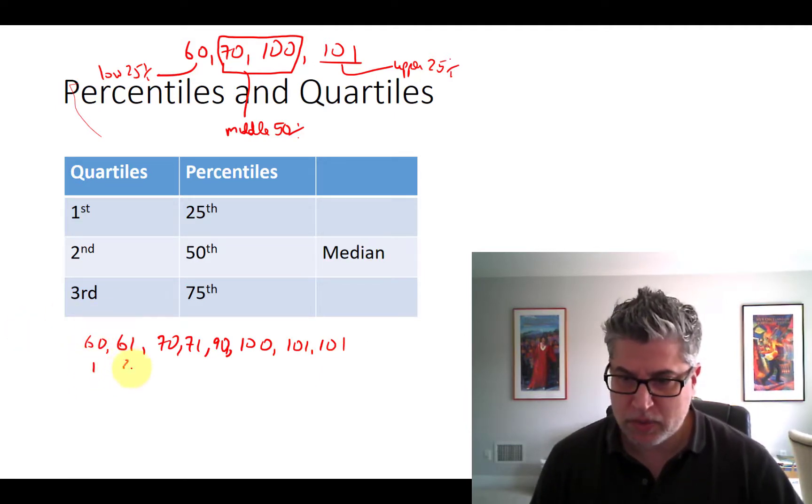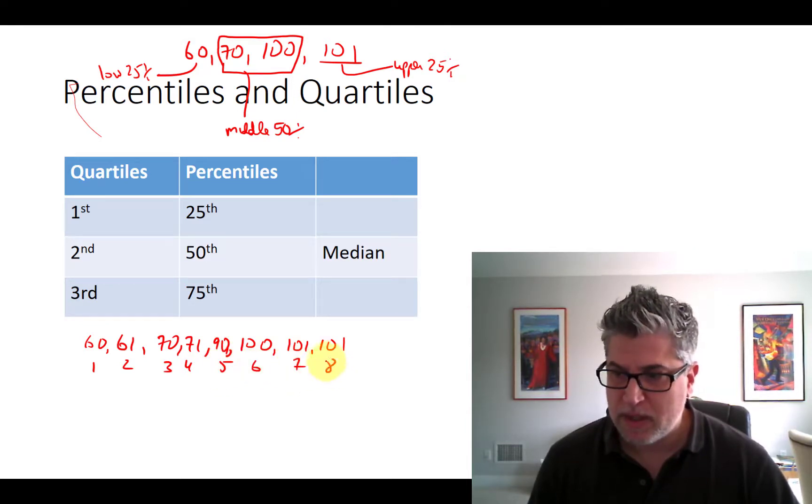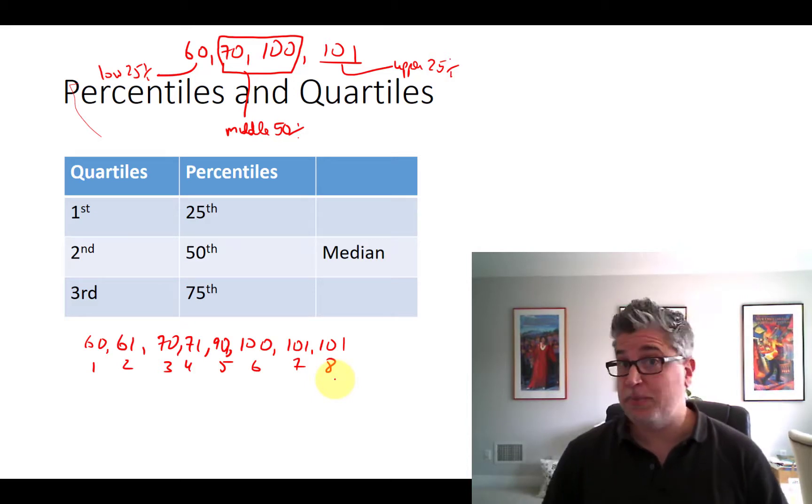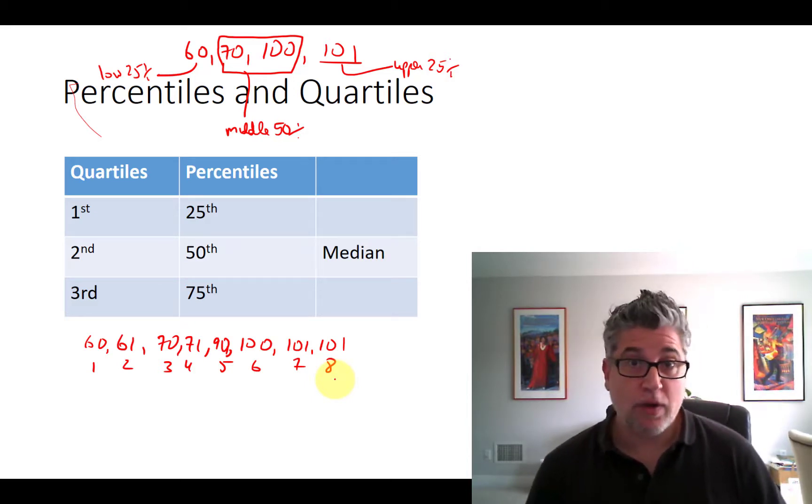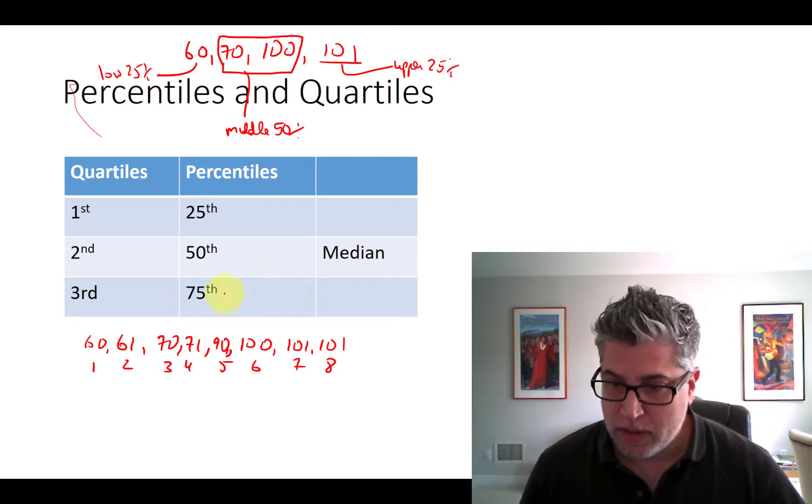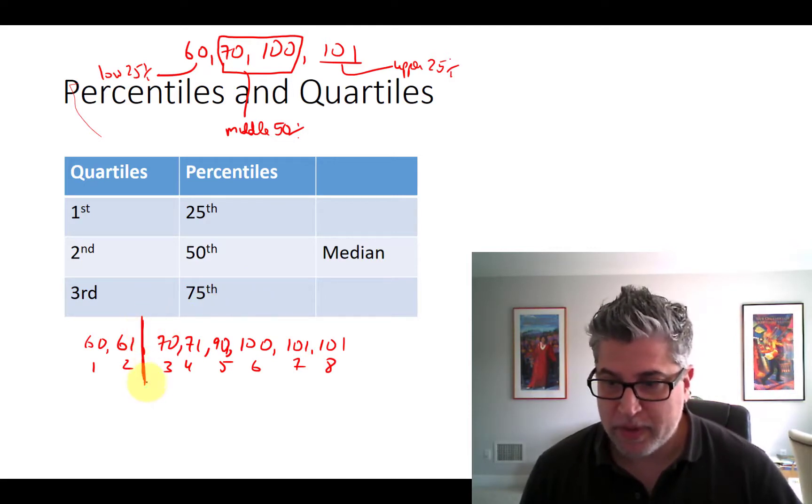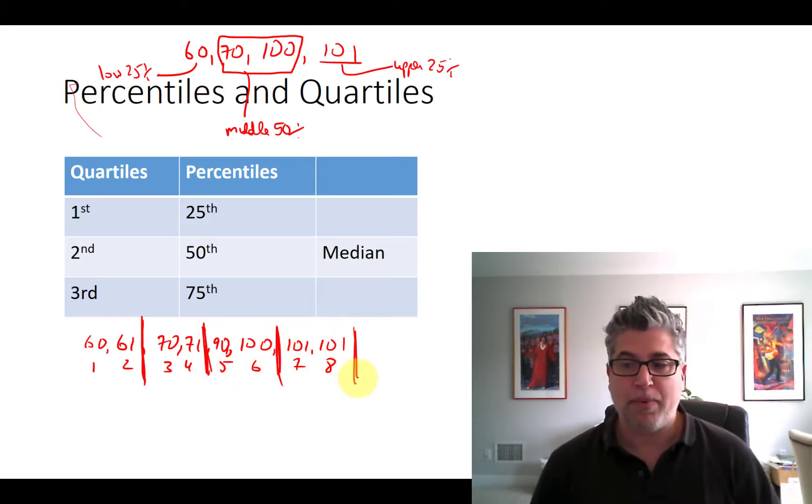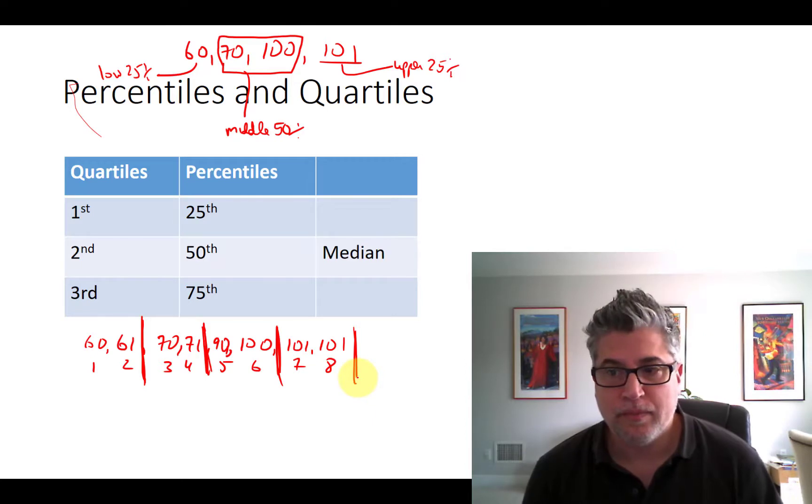Do I have eight numbers here? I've got one, two, three, four, five, six. I have eight numbers. So this is also nicely split upable into fourths. My bottom fourth split is right there. My next fourth, my next fourth, and then the top part.